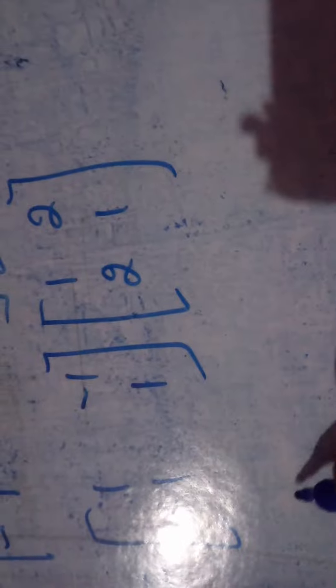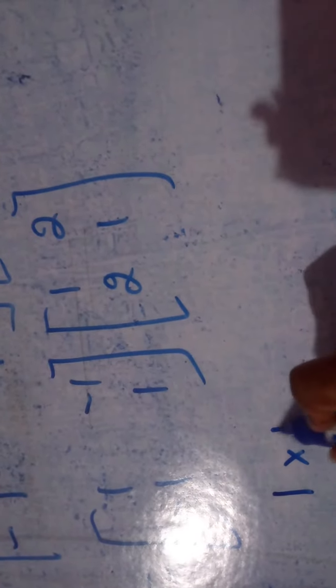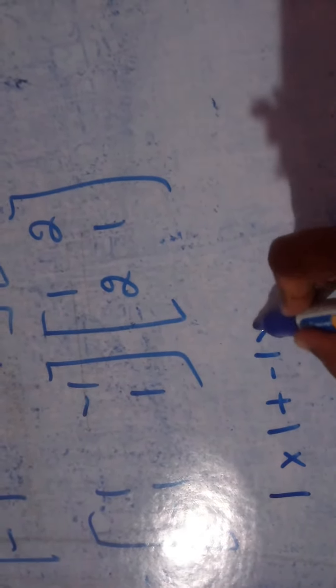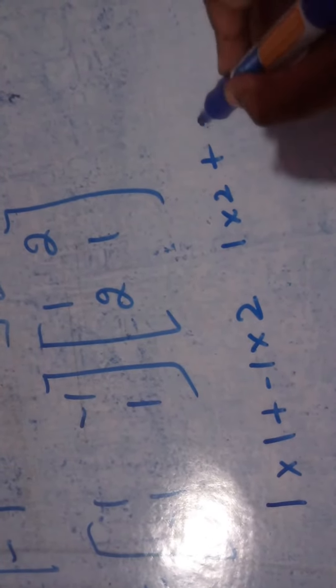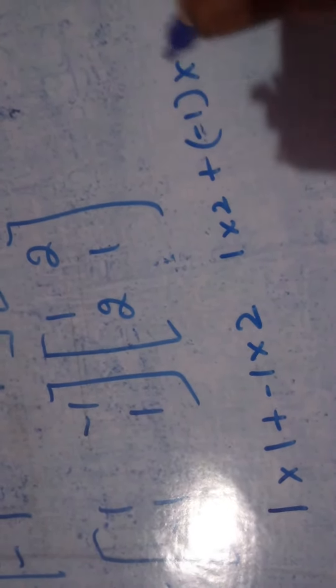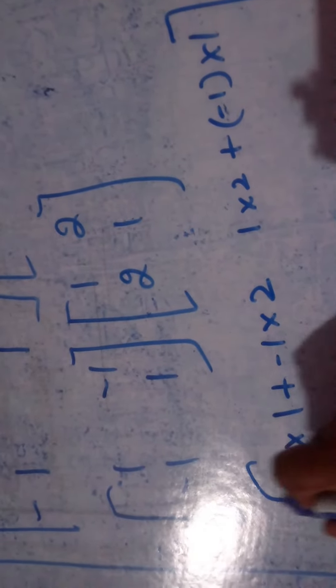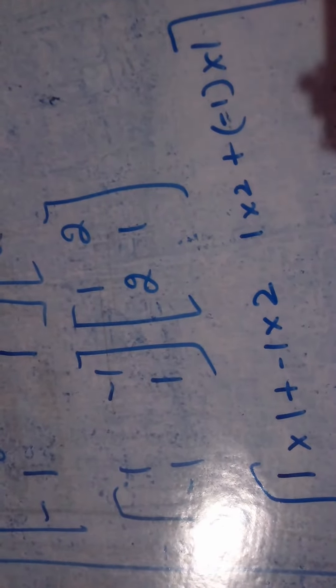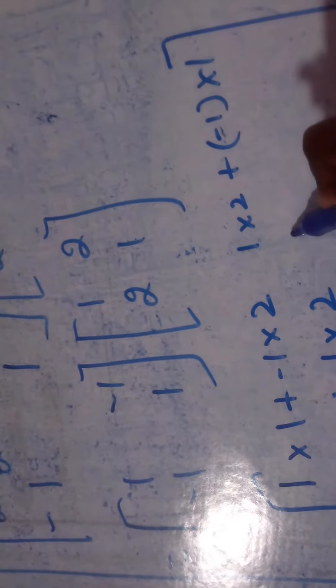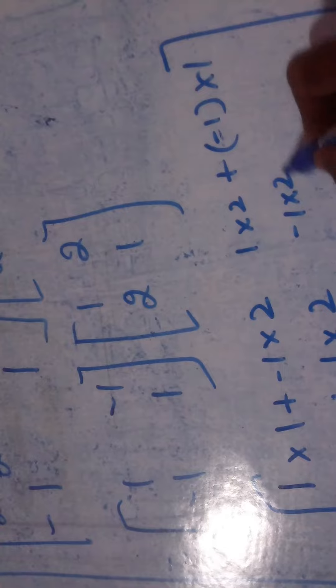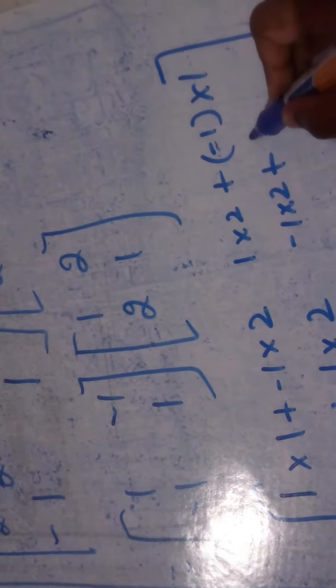So take 1 into 1 plus minus 1 into 2, 1 into 2 plus minus 1 into 1, minus 1 into 1 plus 1 into 2, minus 1 into 2 plus 1 into 1. Now this is the matrix.